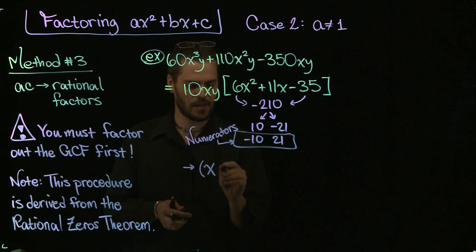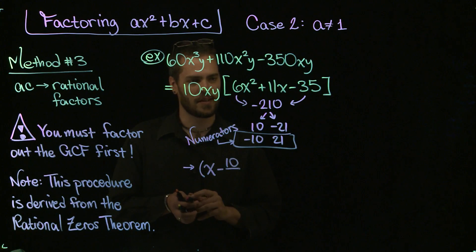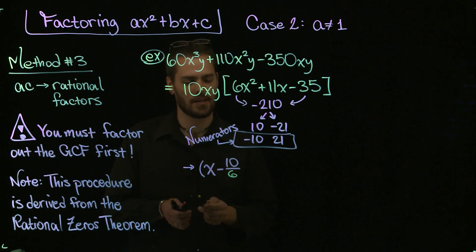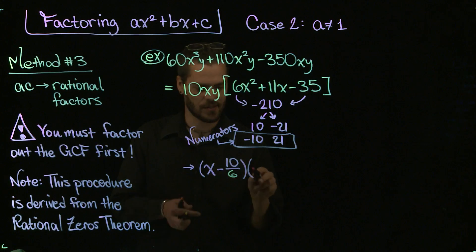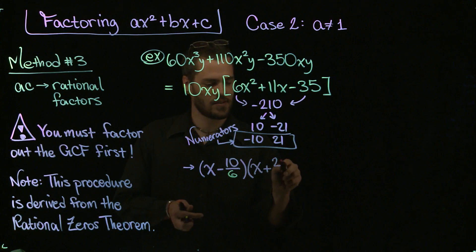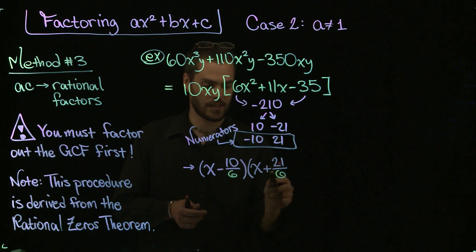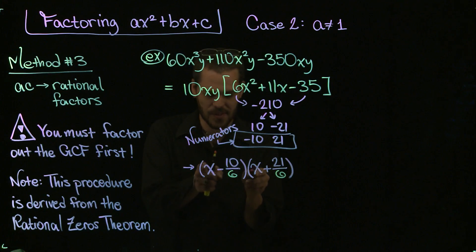When you multiply them, it also adds to positive 11. Now the difference between this and Method Number Two is what I do with these two numbers here. What I do with them is produce fractions within two binomials. These are going to become the numerators to the following two fractions. I'm going to go straight to the solution almost by producing two binomials. X, I'm going to use this as my numerator, minus 10, the minus because of the negative, over the denominator, it turns out, is always going to be the leading coefficient, six.